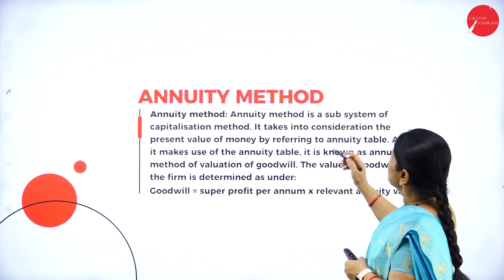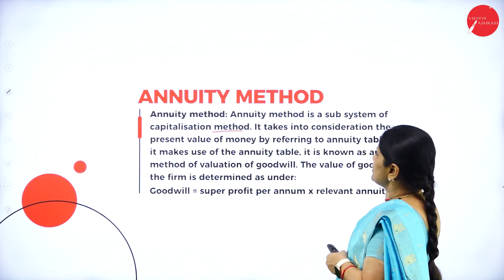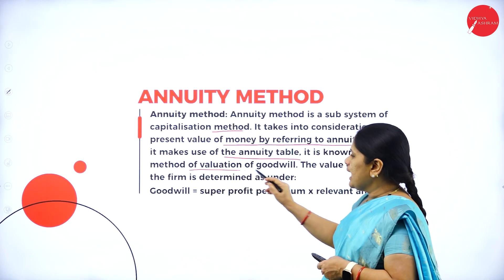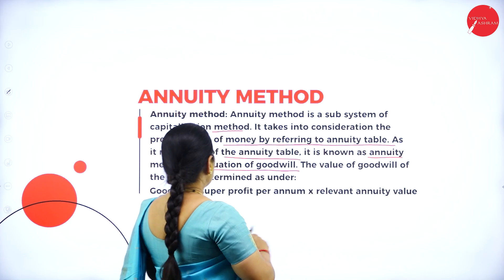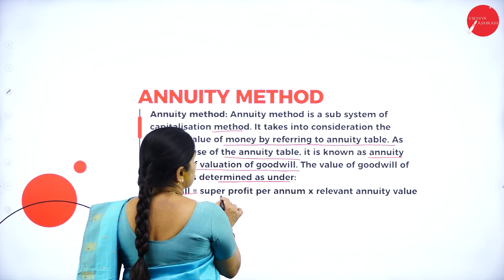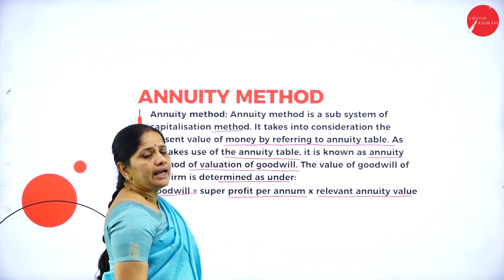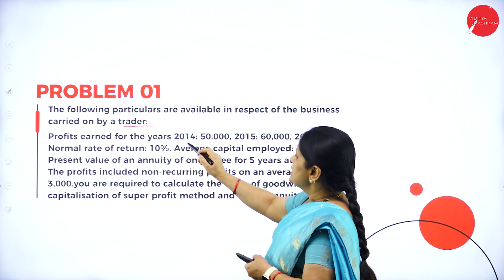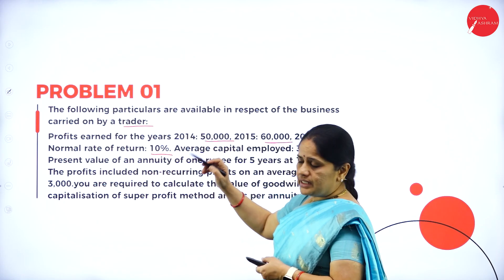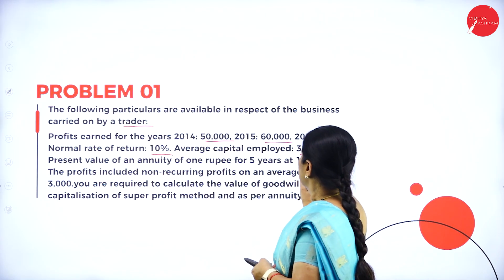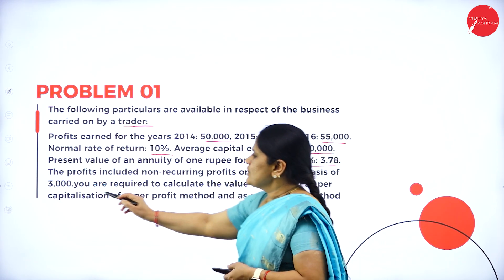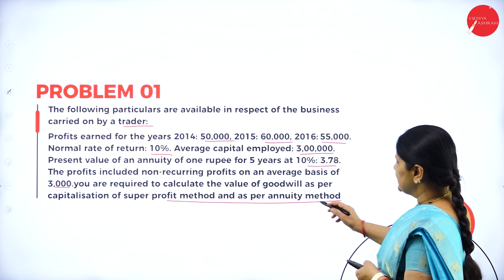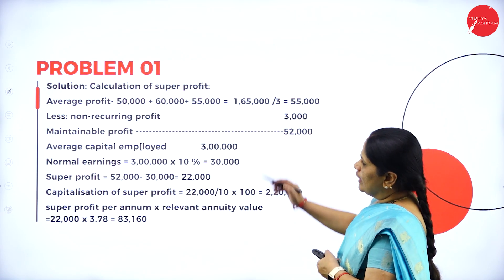The annuity method is a subsystem of the capitalization method. It takes into consideration the present value of money by referring to the annuity table. Goodwill equals super profit per annum multiplied by the relevant annuity value. Problem: Profits for 3 years are 50,000, 60,000, and 55,000. Normal rate of return is 10%, average capital employed is 3 lakhs, the present value of annuity is 3.78, and non-recurring profits are 3,000. Calculate goodwill as per the capitalization of super profit method and the annuity method.